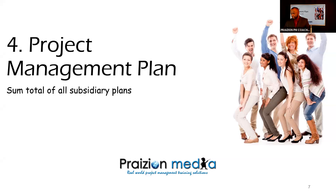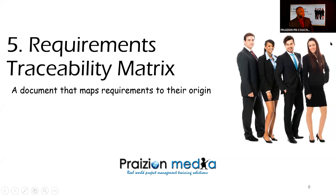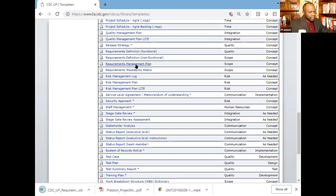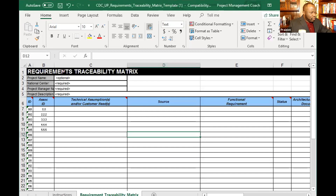Our next power tool after the project management plan is the requirements traceability matrix. There's a pretty useful matrix from the Center for Disease Control and Prevention website. Let's download and open it up. And there you have it — the requirements traceability matrix.